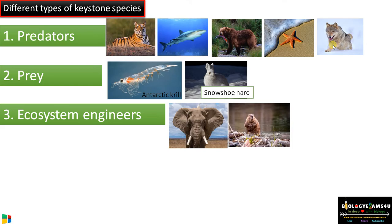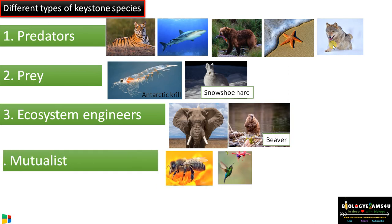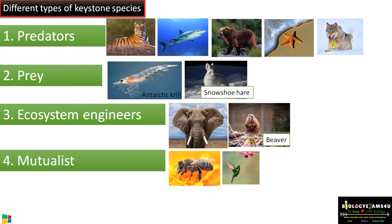The African elephant overgrazes grassland, keeping that ecosystem as grassland and not allowing tall plants to grow. The beaver, by making dams, actually creates an ecosystem for many other species. Such species are called ecosystem engineers. There can also be mutualists like honeybees and hummingbirds, which pollinate hundreds of plant species.